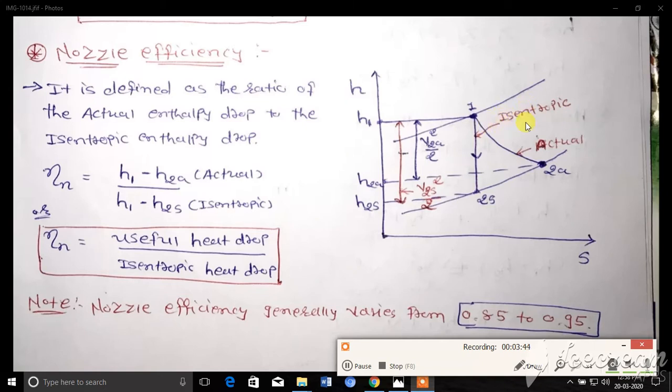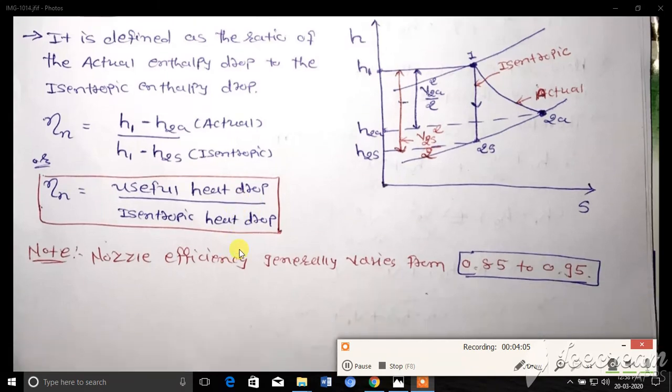Mathematically we can write nozzle efficiency as H1 minus H2A divided by H1 minus H2S. That is actual enthalpy drop divided by isentropic enthalpy drop. Eta n can also be written as useful heat drop divided by isentropic heat drop. Nozzle efficiency generally varies from 0.85 to 0.95.